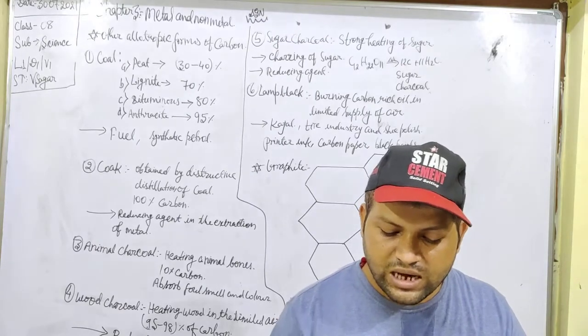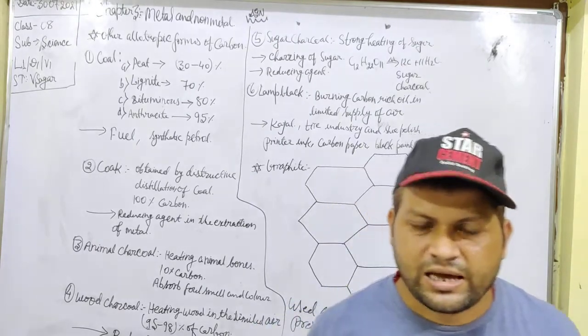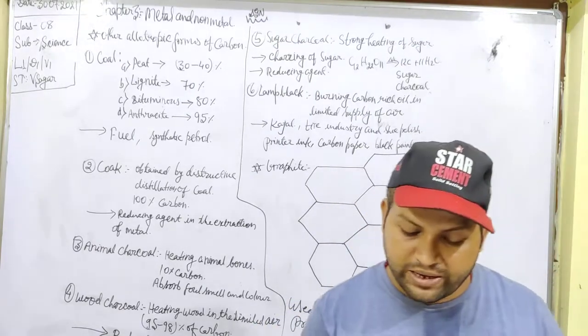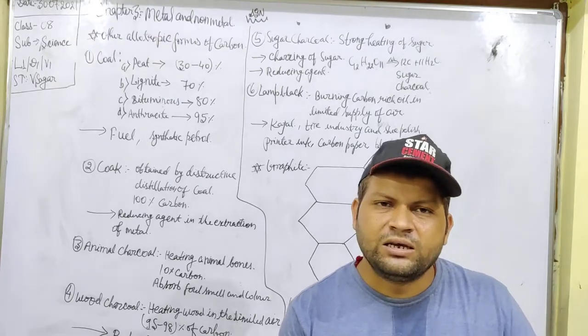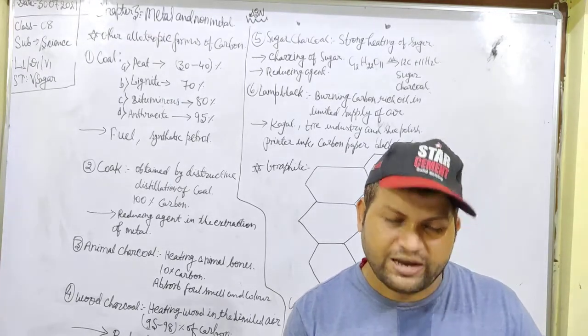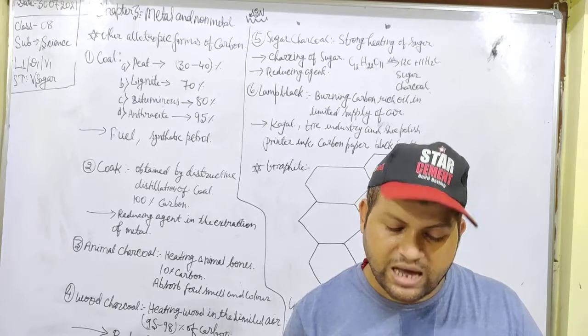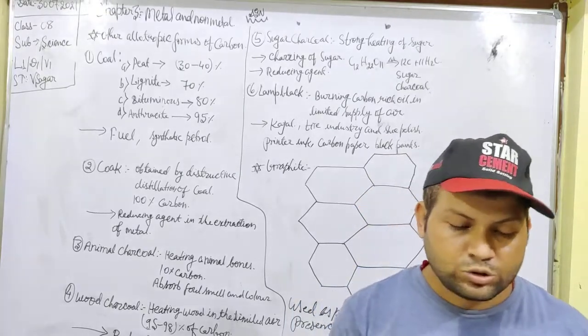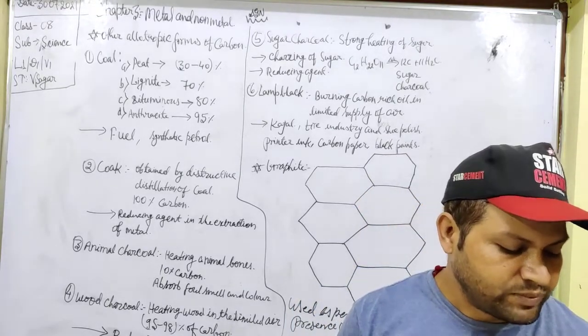It has 99% of carbon and silky appearance because some oil is present in it. Usage of lamp black: lamp black or carbon black is used in the tire industry, in making polish, printer ink, black paint and carbon papers. So, these are the uses of lamp black.